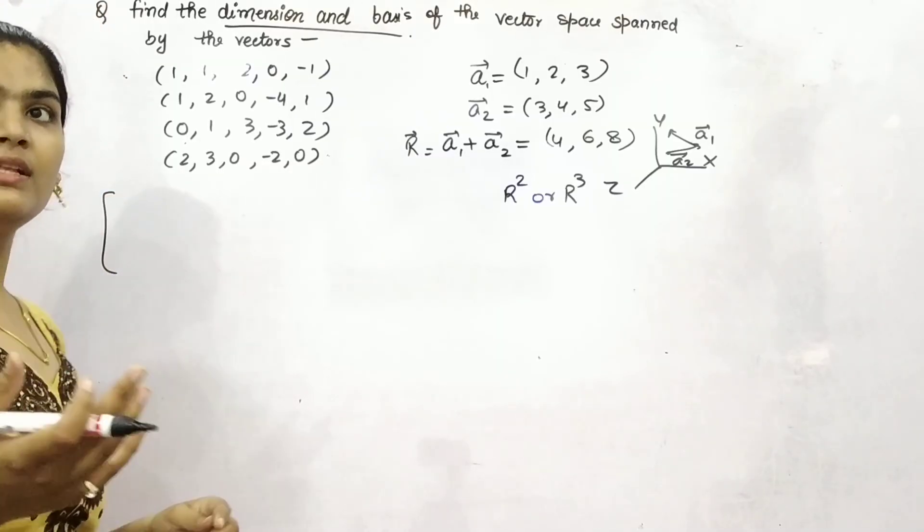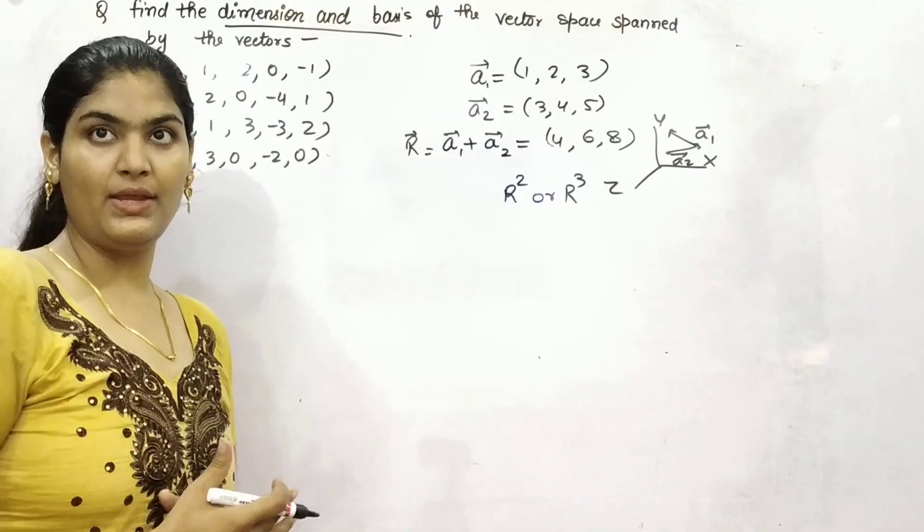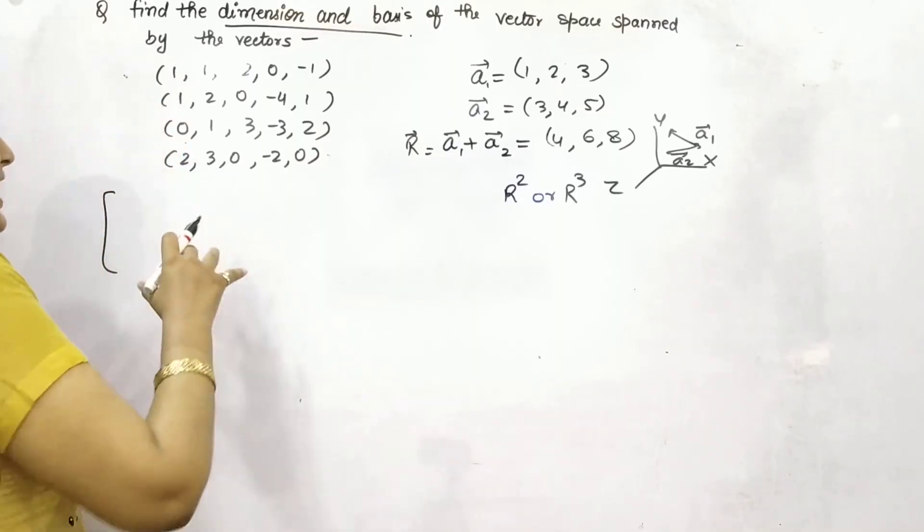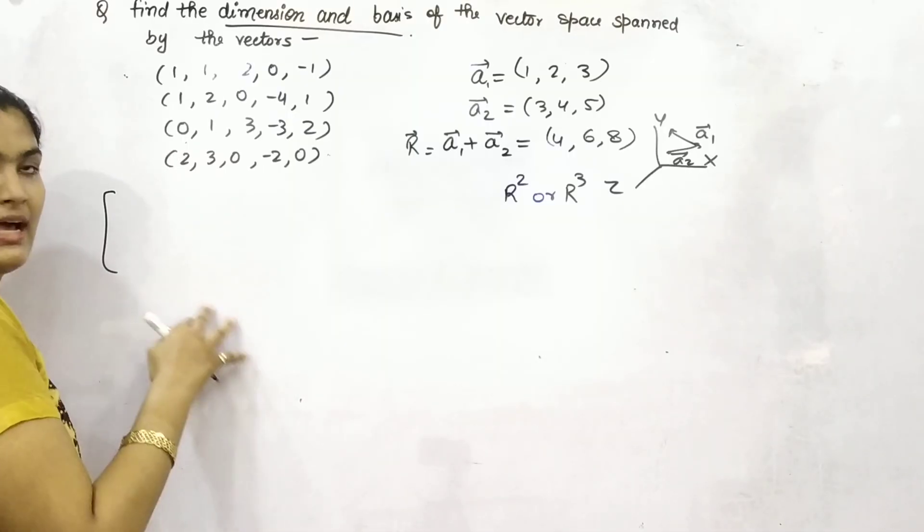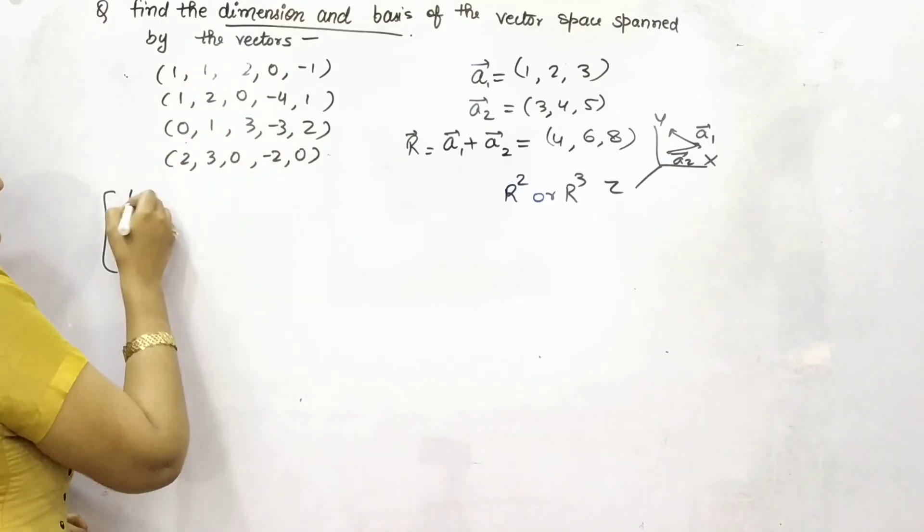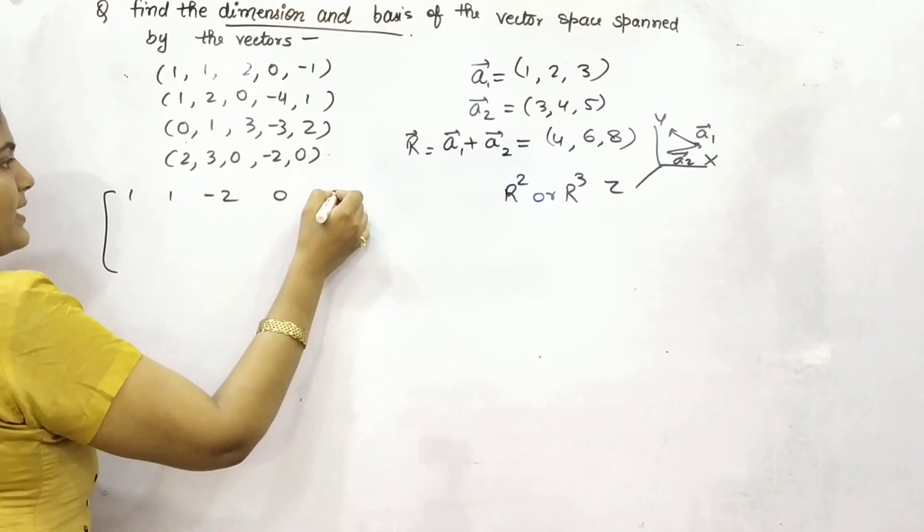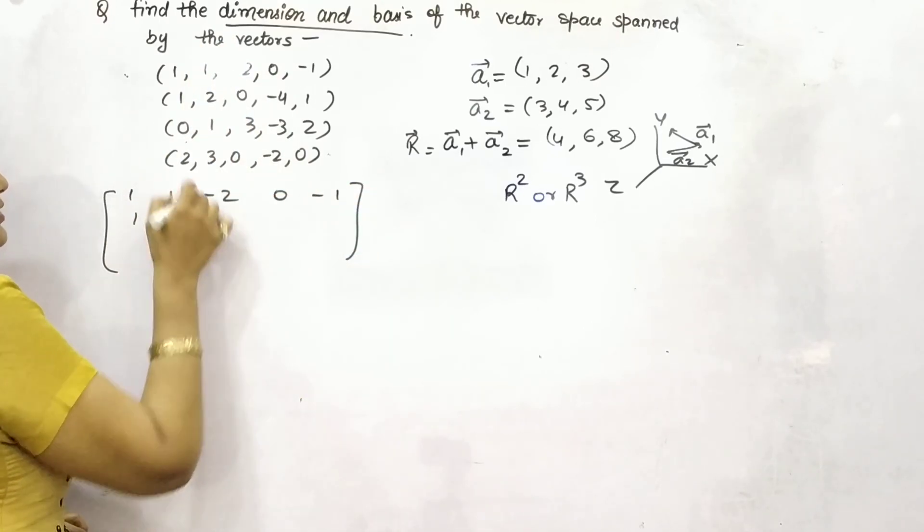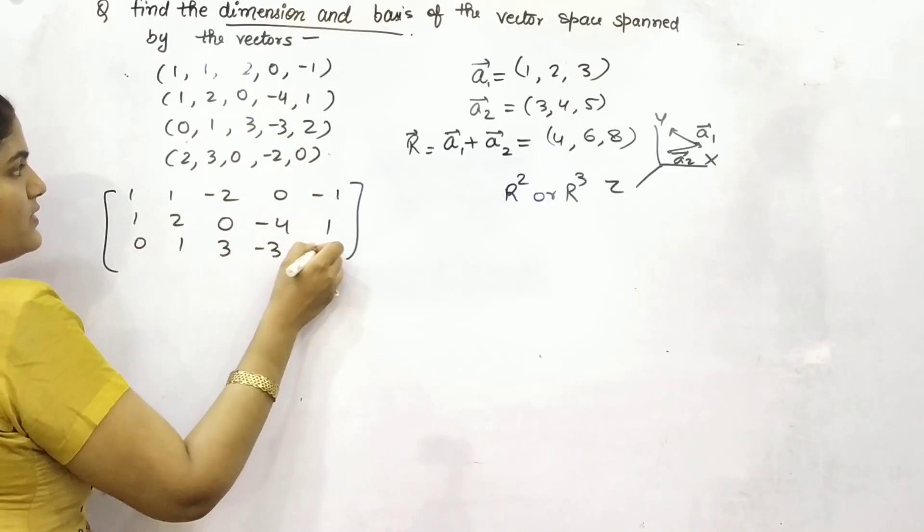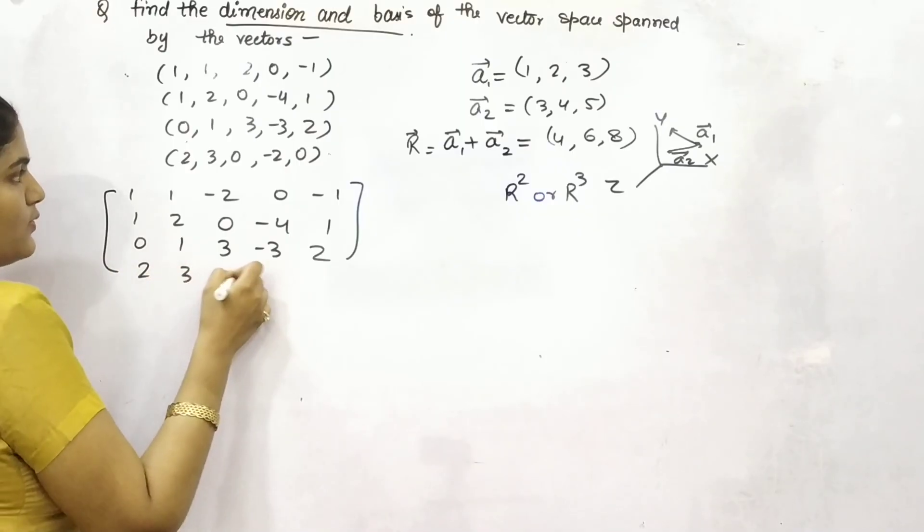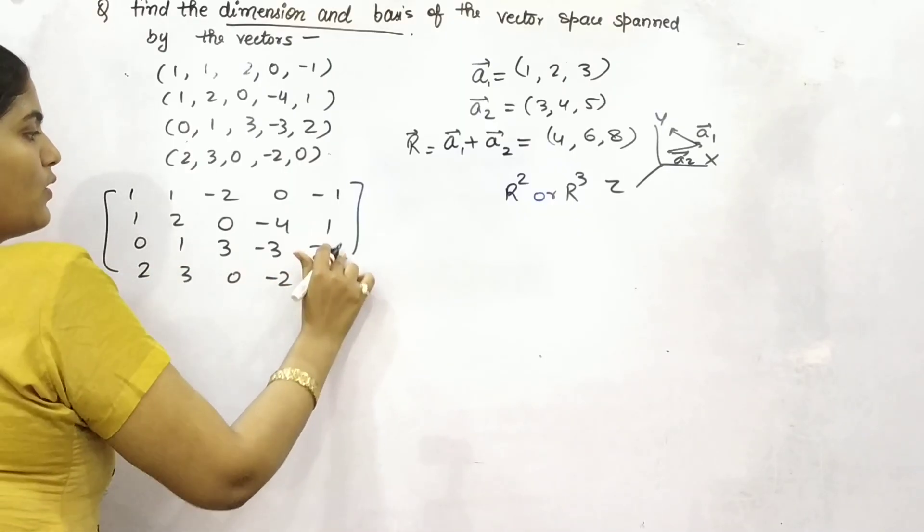You can apply many methods, but I am telling you with elimination. That is also row elimination. Try to make the elements under the diagonal as 0. So it is 1, 1, minus 2, 0, minus 1, 1, 2, 0, minus 4, 1, 0, 1, 3, minus 3, 2, 2, 3, 0, minus 2, and 0.